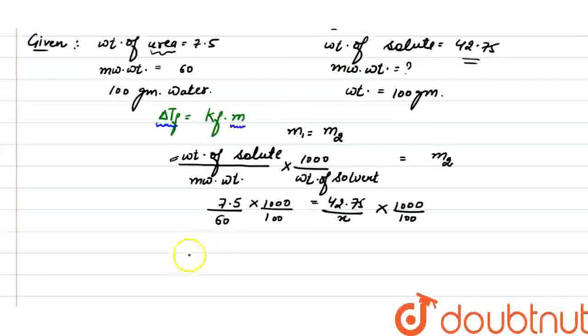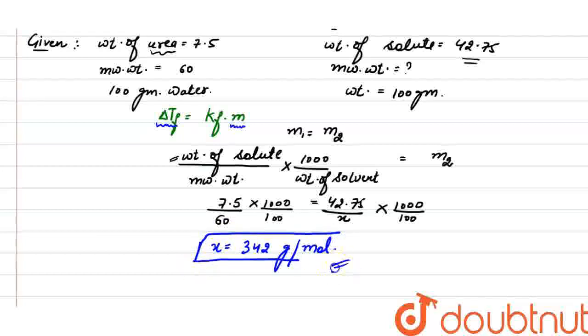Now, after solving, molecular weight of the solute is 342 gram per mole. So, the molecular weight of unknown substance is 342 gram per mole.